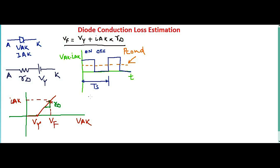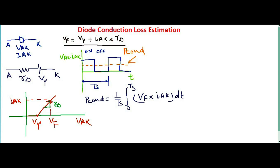Now let's write the equation to calculate conduction loss for the complete switching period. P conduction equals (1/TS) times the integral from 0 to TS of VF into IAK dt. You are calculating the area under the curve for the complete switching period TS. Substituting VF, you get P conduction = (1/TS) · ∫₀ᵀˢ VF · IAK · dt.